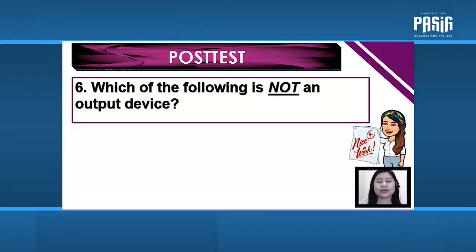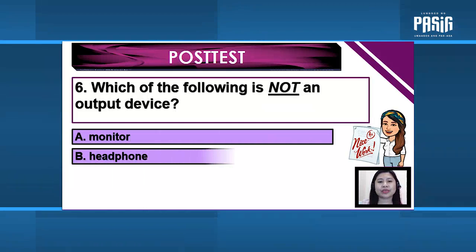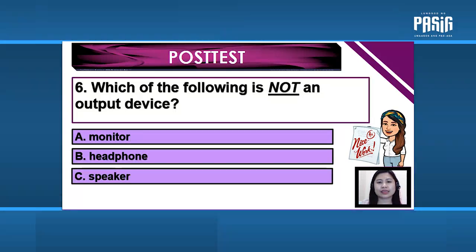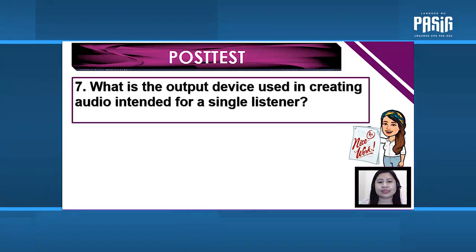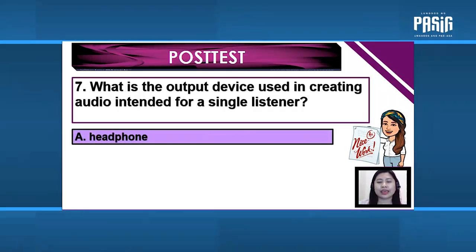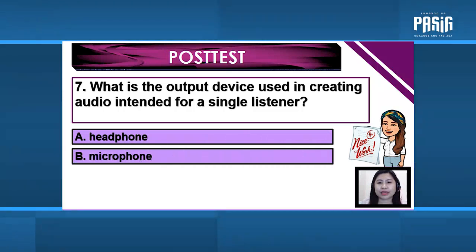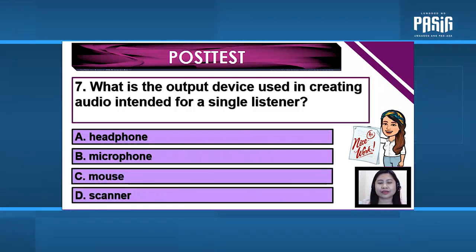Number 6: Which of the following is not an output device? A. Monitor. B. Headphone. C. Speaker. D. Webcam. Number 7: What is the output device used to create audio intended for a single listener only? A. Headphone. B. Microphone. C. Mouse. D. Scanner.